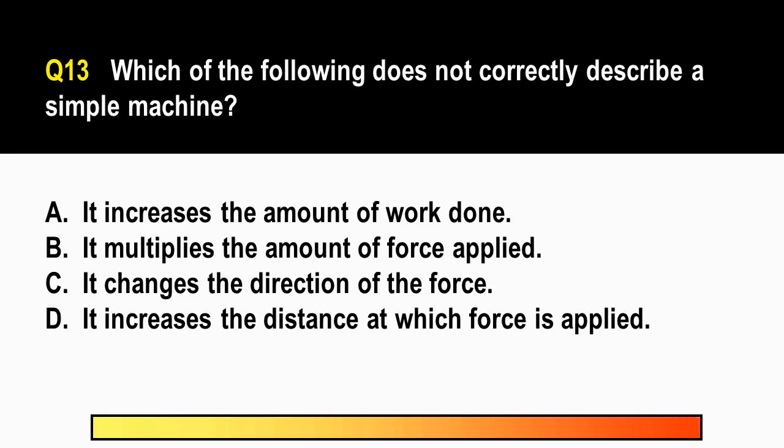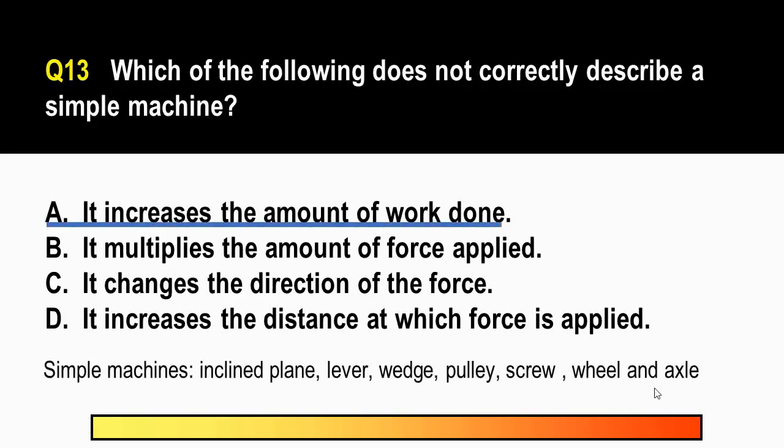The correct answer is letter A. So, ancient people invented simple machines to help them do work. And these simple machines are lever, the inclined plane, the pulley, the screws, the wedge which we see in our everyday lives. So, a machine helps doing work easier by either changing the direction of the force or increasing the magnitude of a force or increasing the distance or speed of a force. But remember, remember that using a machine does not mean that you do less work. So, here letter A is incorrect. A machine does not increase the amount of work done.